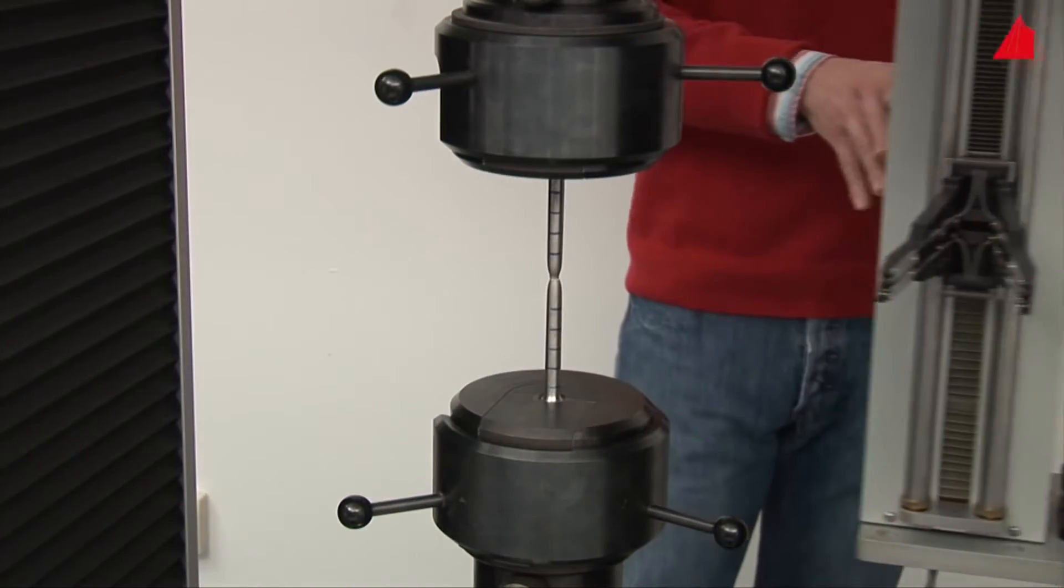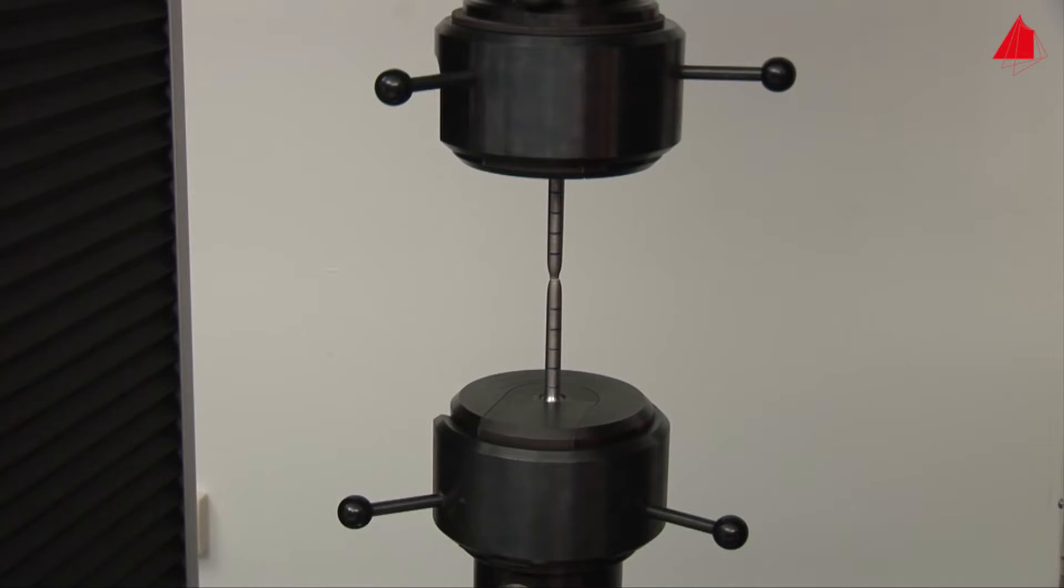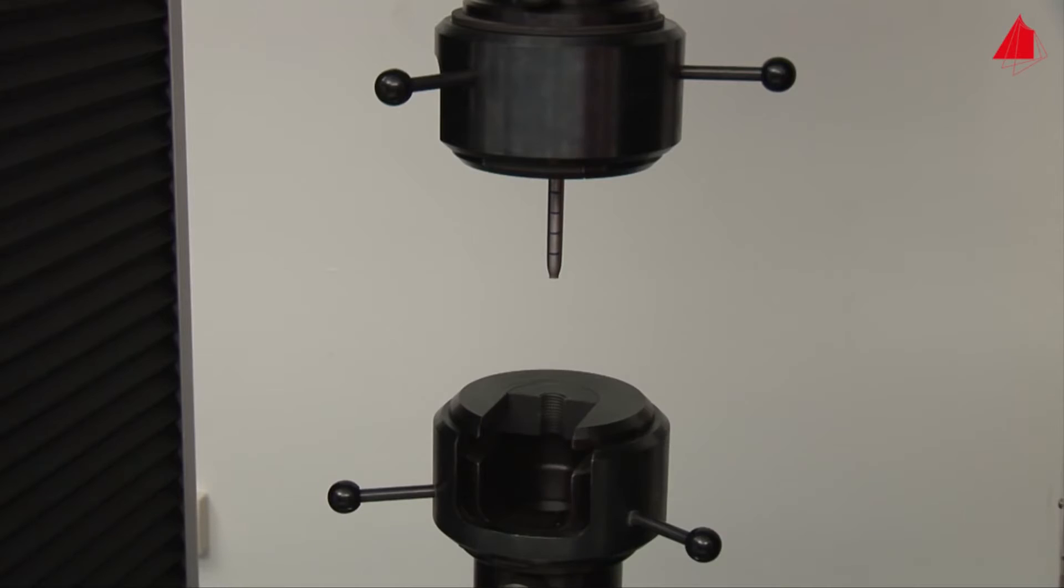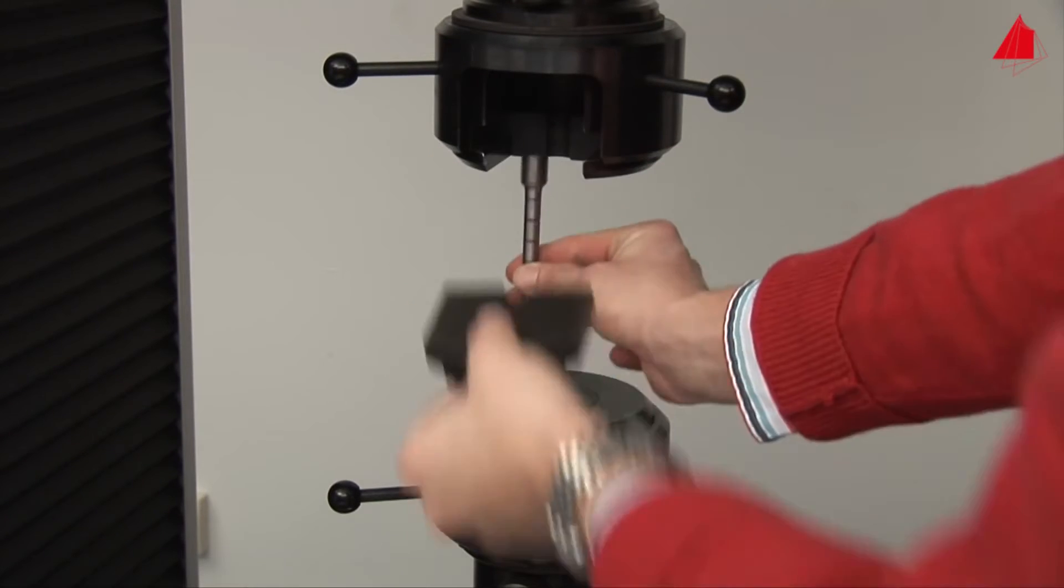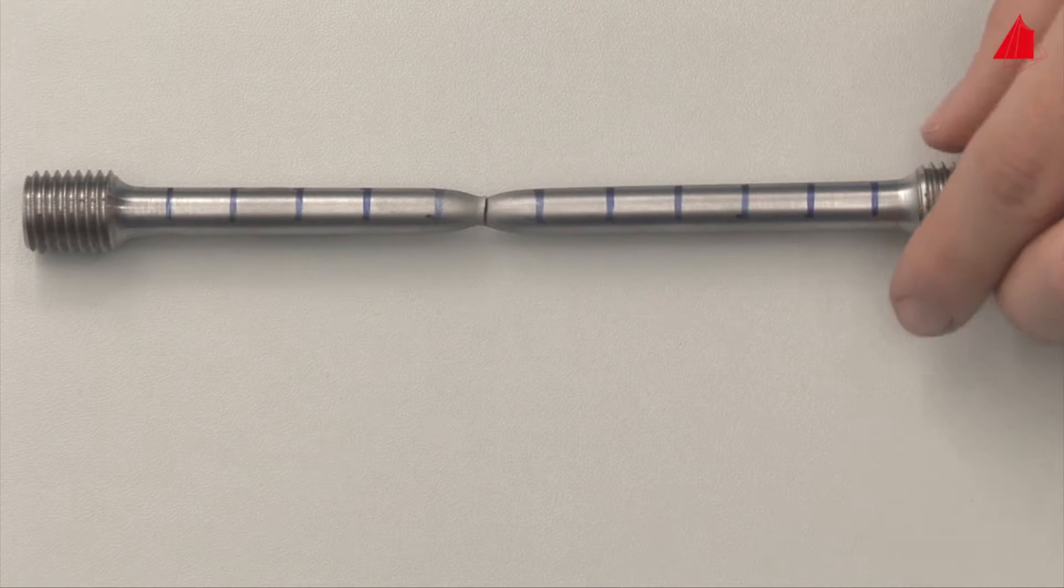In the last step, the tester swings the extensometer back into its resting position and removes the broken test piece. On the work table, he puts the fragments back together again.